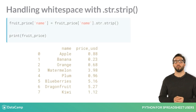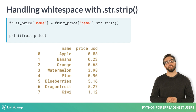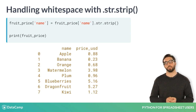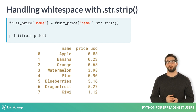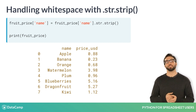The .str.strip method will remove any leading and trailing spaces in our entries. Just like we use .str.upper or .str.lower, we use .str.strip. This is a useful precautionary method for real-world data.